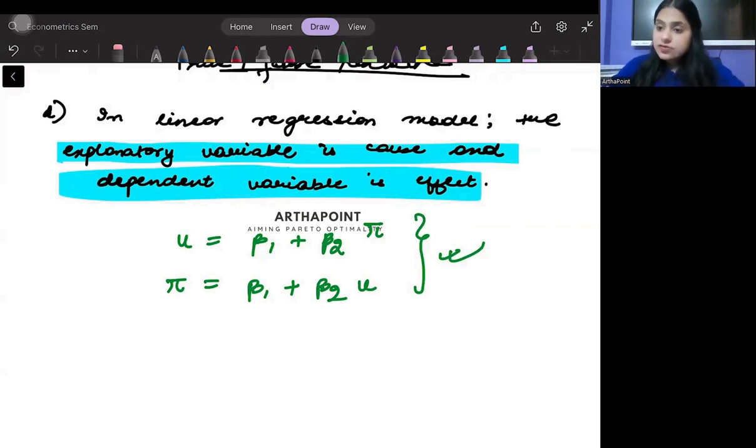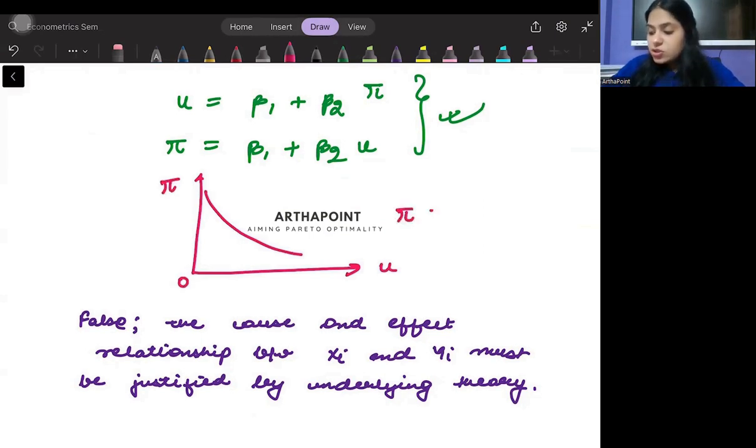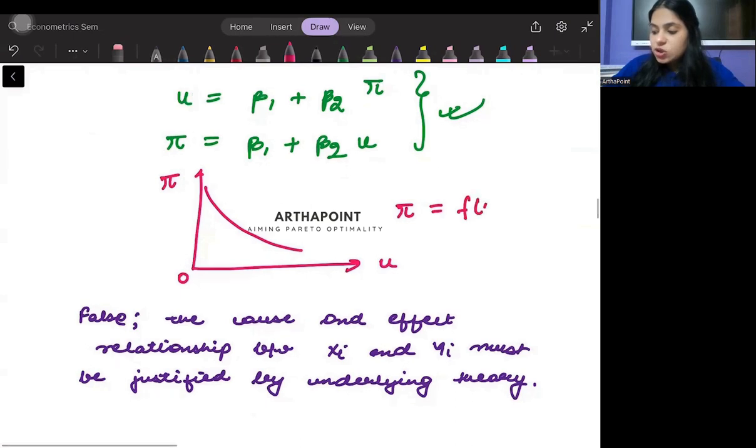But it is the Phillips curve that tells me that whenever we need to draw this relationship, we must take unemployment here and inflation here. Therefore, inflation should be written as a function of unemployment.